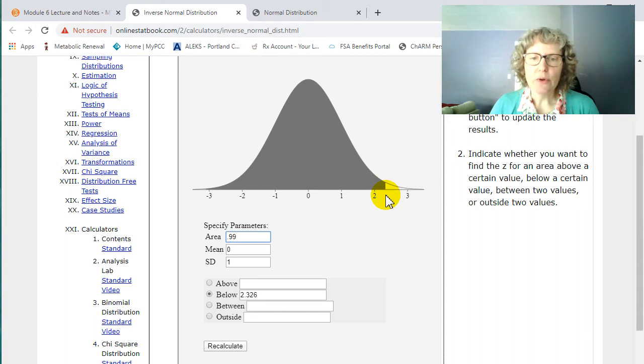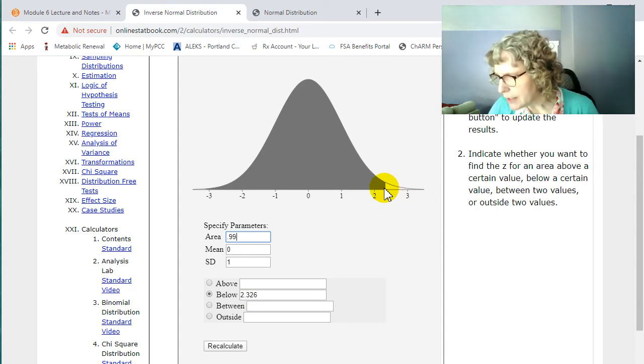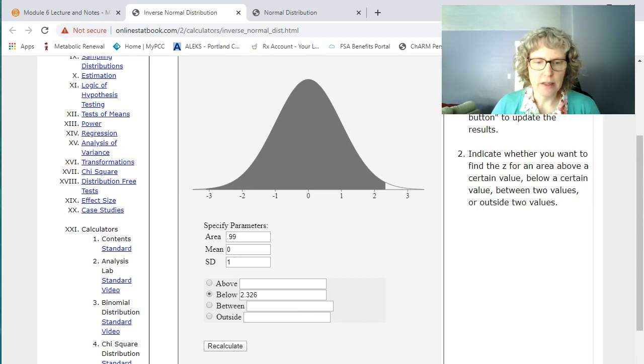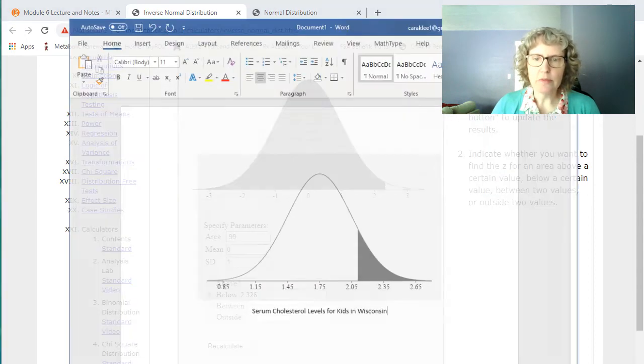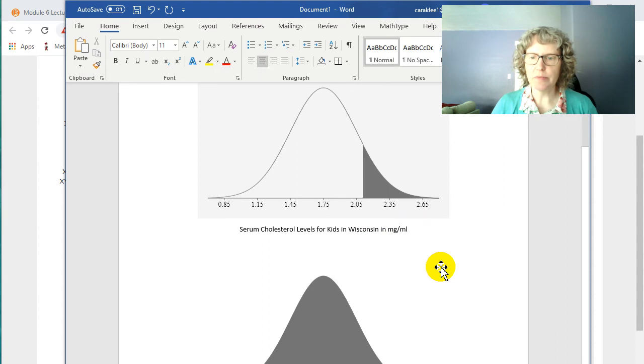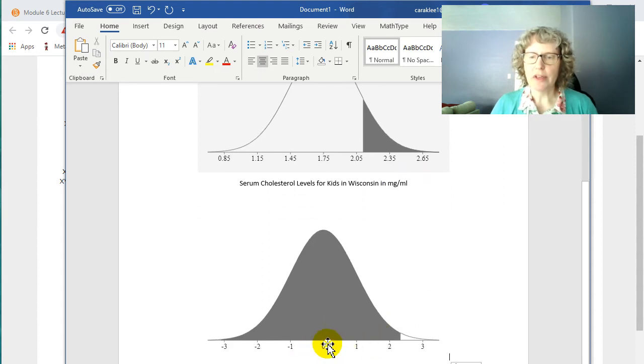And so that number, that cutoff score is 2.326 milligrams per milliliter. I could copy and paste this into my document. And I forgot to put in milligrams per milliliter. Now I'm going to go down and I'm going to Ctrl V, just paste my other thing.